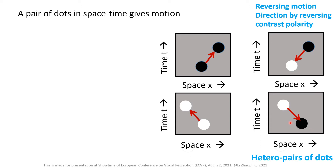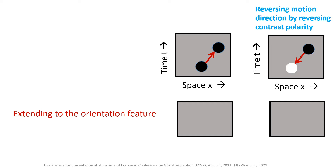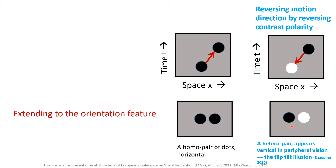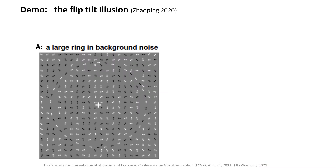Let's call these hadal pairs of dots when the two dots in a pair are opposite in contrast polarity, and call these homo pairs of dots. Let's generalize reversed motion to reverse orientation. These homo pairs of dots are horizontally aligned, giving a horizontal orientation feature value. However, if it's a hadal pair, it will appear vertical when you view it in your peripheral vision. Reversed orientation is when the perceived orientation is flipped by 90 degrees from the actual alignment between the two dots.